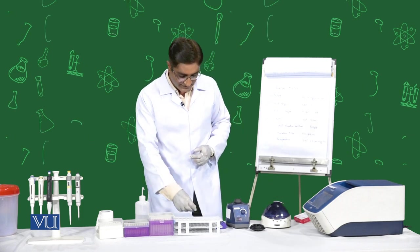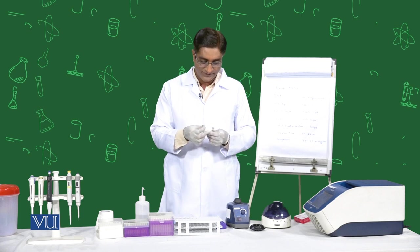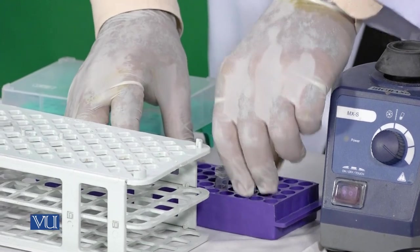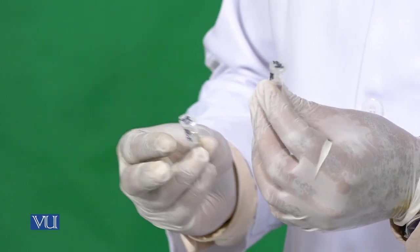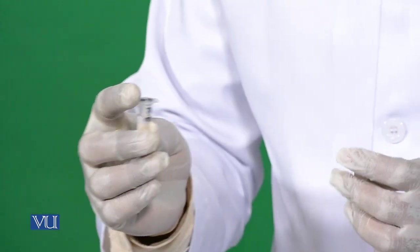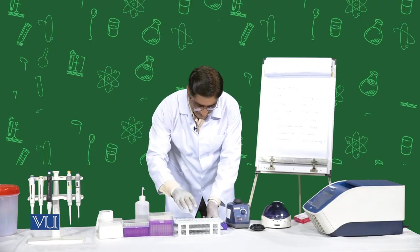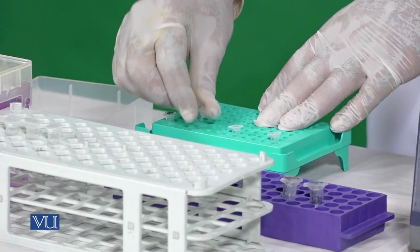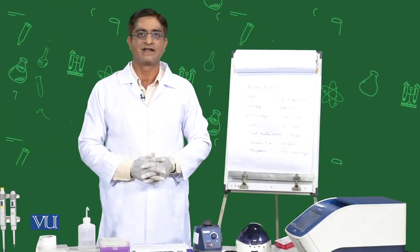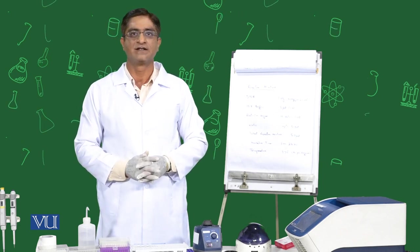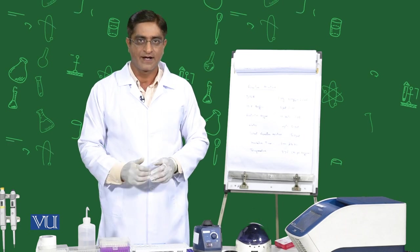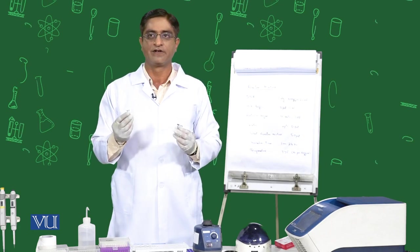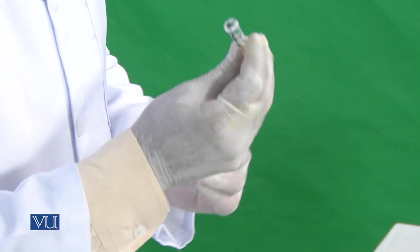Now we will perform this reaction. We have different things with us — two types of DNA, our reaction buffer, and our restriction enzyme. We will prepare it in PCR tubes. We will take two samples: sample one and sample two.